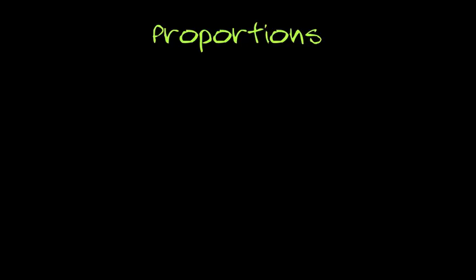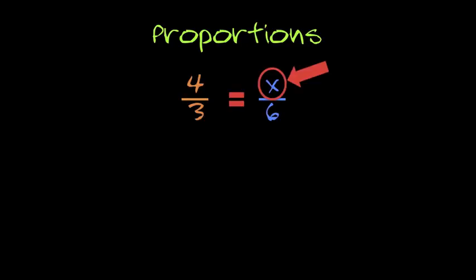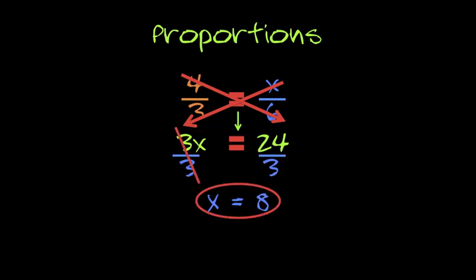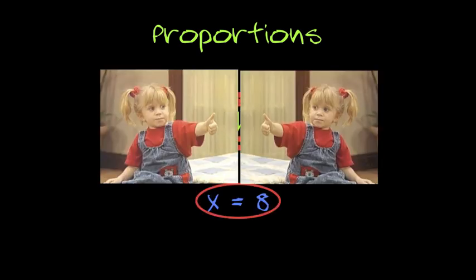I got math skills in mathematics and more, son. Let me drop some knowledge all about proportions. It's a couple ratios, equal sign in the middle, with a missing variable that we solve like a riddle. The first step you do is cross-multiply. Write your answer down below, bring down the equal sign. Now you've got an equation, you need to solve it, kid. But you've got it, dude, just like the Olsen twins.